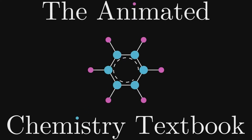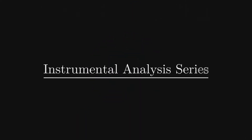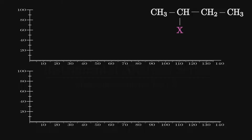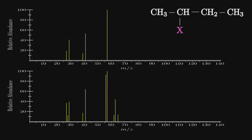Welcome fellow chemists to the third mass spectrometry video, where we will look at fragmentation and functional groups. We'll start with the halides. Here are spectra of different 2-halobutanes. In the previous video we focused heavily on molecular ion peaks, but notice these spectra don't have any.